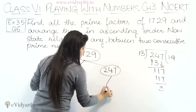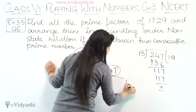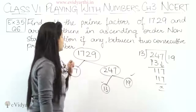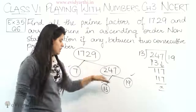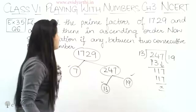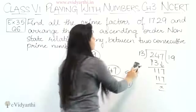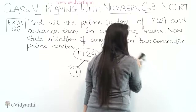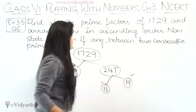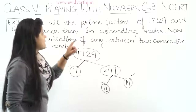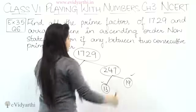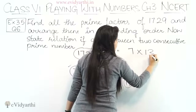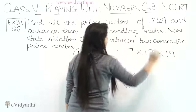So 19 is a prime number, 13 is a prime number, and 7 is a prime number — these three are prime factors. Arranging them in ascending order: 7 × 13 × 19.